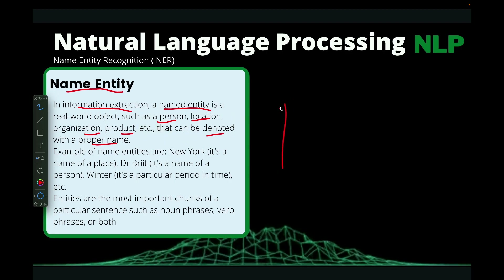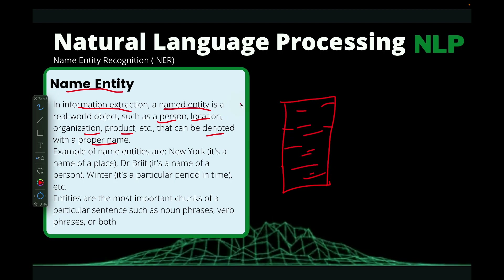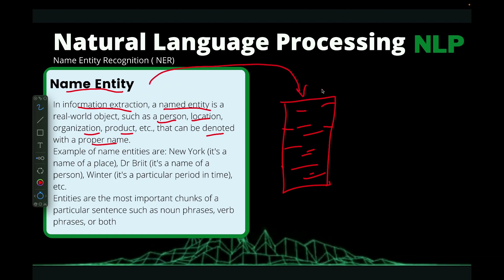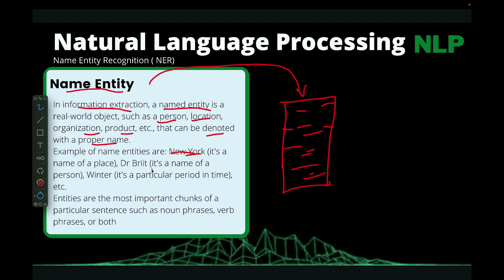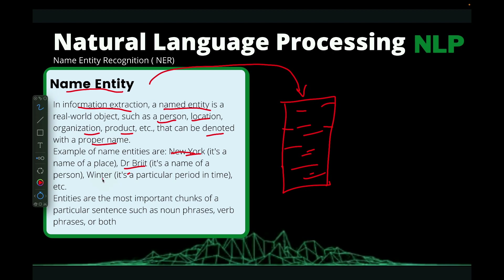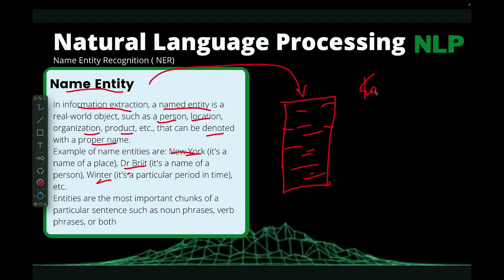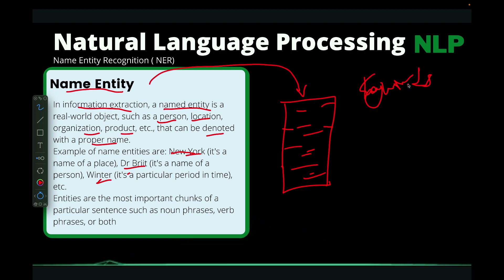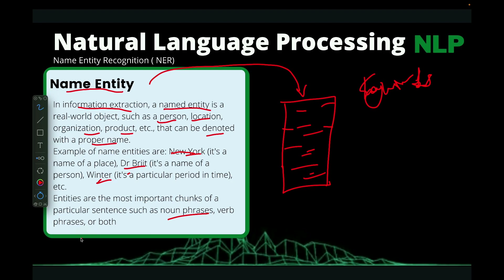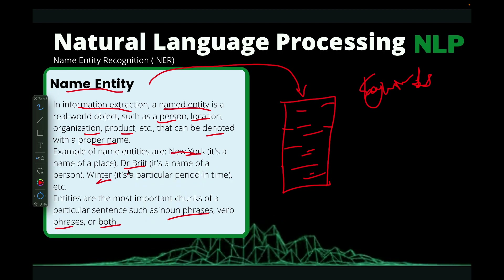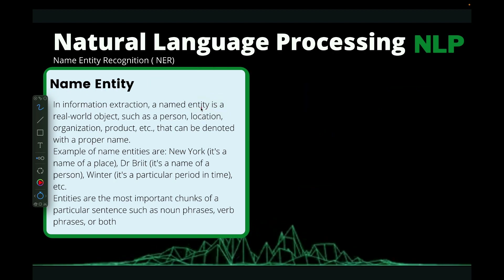For instance, if you have a document containing a lot of words, the named entities we refer to are the important keywords — something like a name of a place, say New York, or a name of a person, or maybe a particular period in time like winter. Those are what we refer to as named entities. Simply, they are the keywords in your dataset or corpus — they can be a noun phrase, a verb phrase, or just a noun.